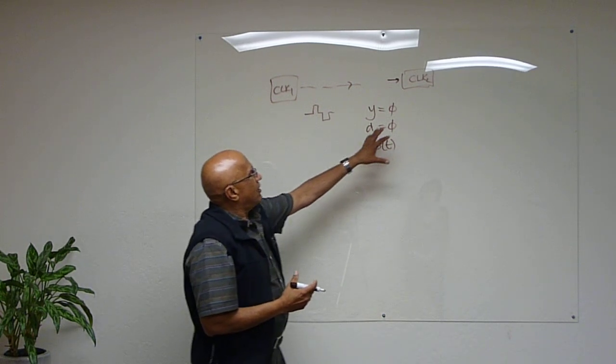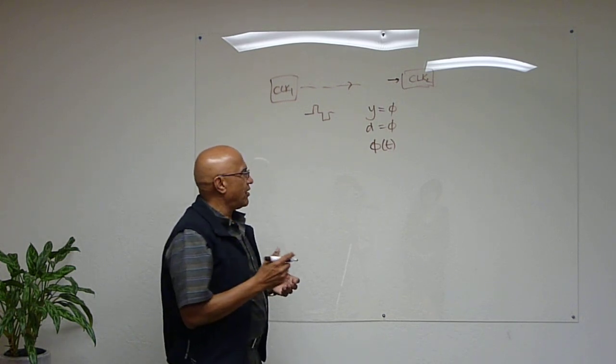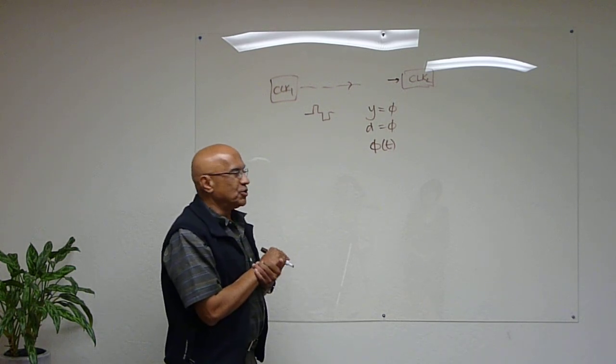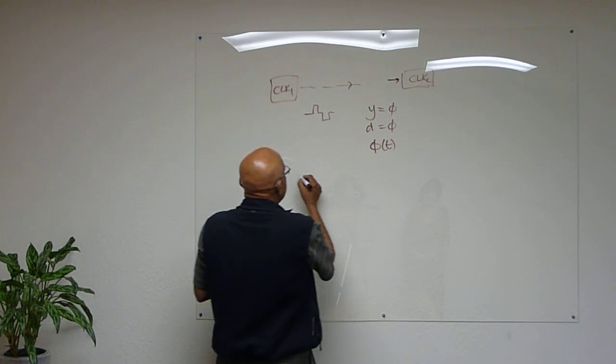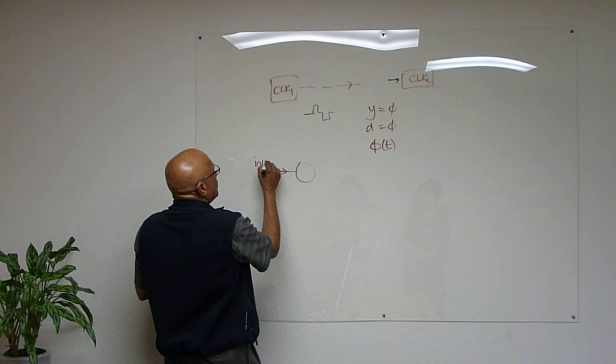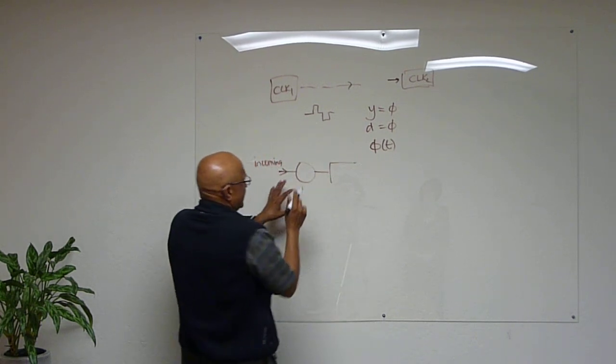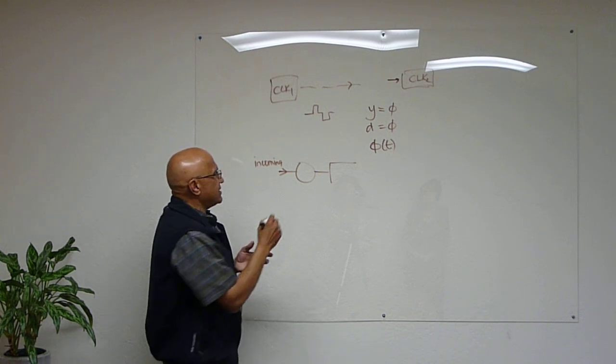So what does this clock 2 do? It applies effectively a phase-lock loop, or an equivalent thereof. And what does a phase-lock loop do? A phase-lock loop looks at the incoming signal, whatever will be the reference. It does a comparison.